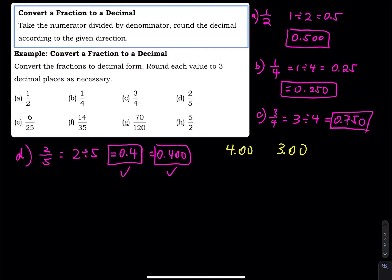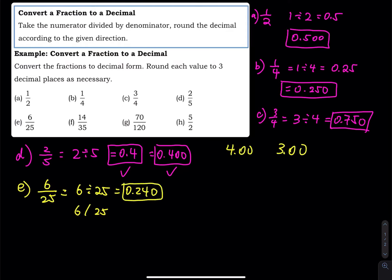Part E is 6 over 25. You take 6 divided by 25 — just type it in your calculator. By the way, a graphing calculator uses the slash symbol for division: 6/25. That equals 0.24. Keep an extra zero to make 3 decimal places: 0.240.